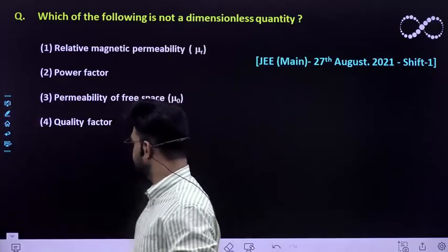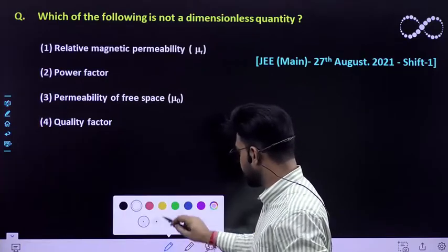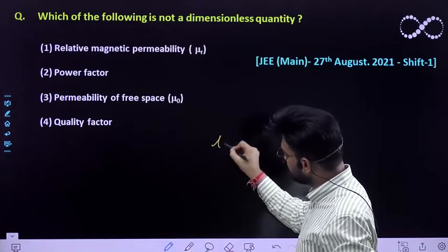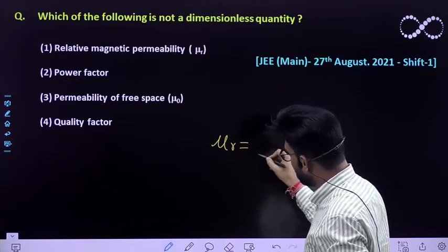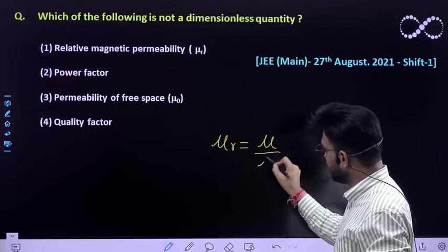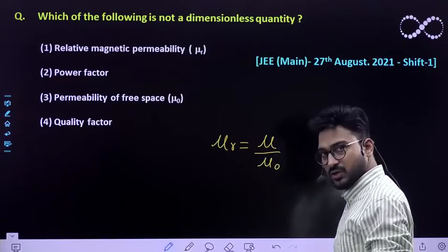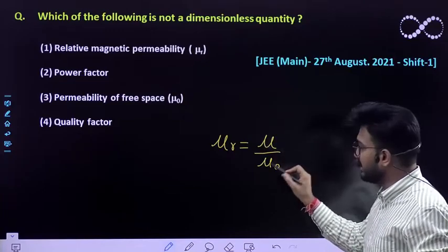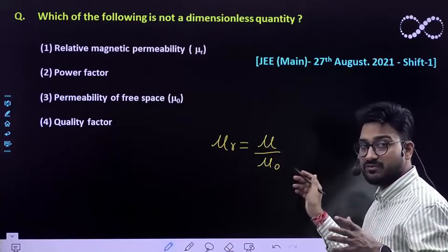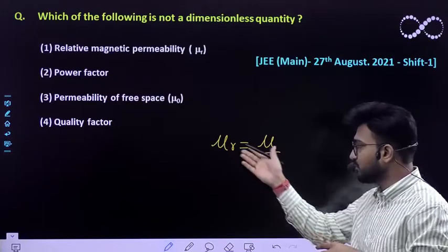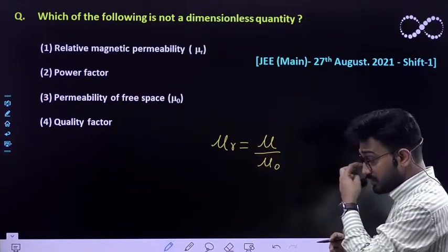We know that relative permeability is nothing but a ratio of permeability of a medium divided by permeability of a free space. Okay, so μ is nothing but permeability of a medium and what is μ₀? μ₀ is the permeability of a free space. So it is the ratio of these two.